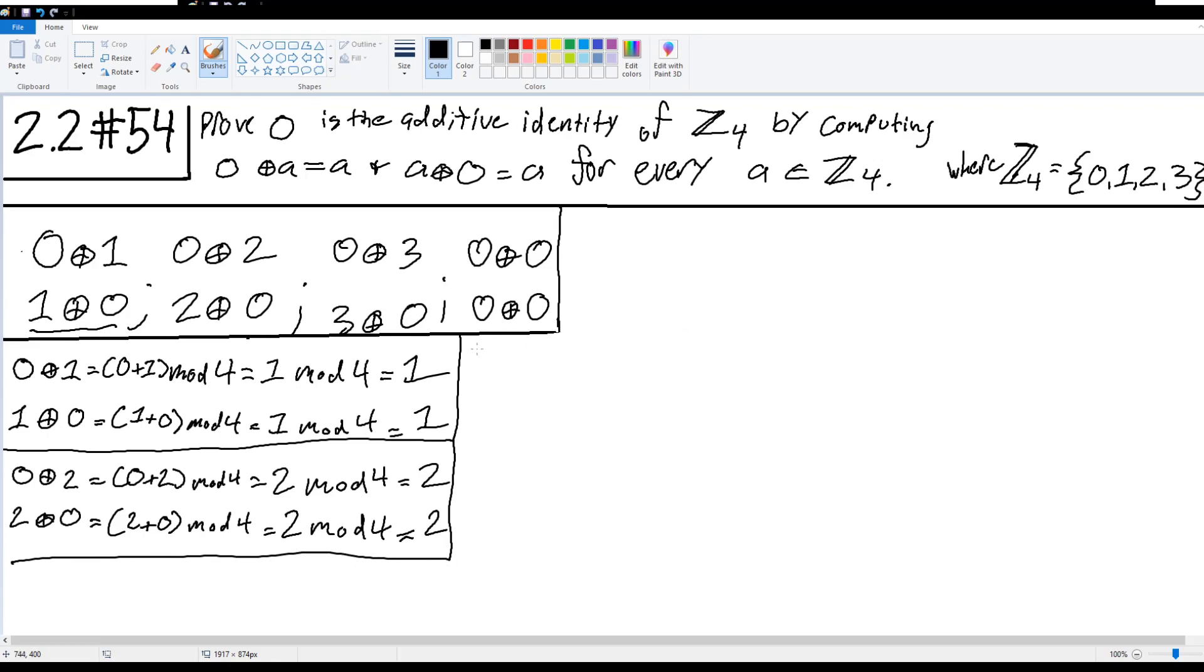We have 0 modular addition 3, which equals 0 plus 3 mod 4, which equals 3 mod 4, which equals, again, 3 is less than 4, so we're left with 3. And 3 modular addition 0 equals 3 plus 0 mod 4, which equals 3 mod 4, which equals 3.